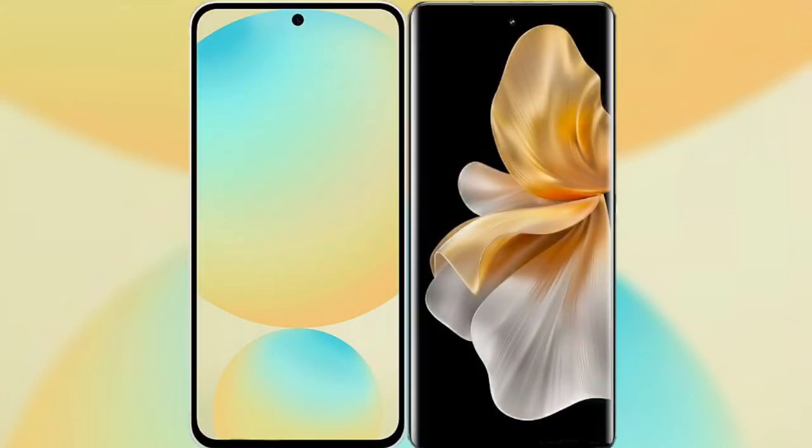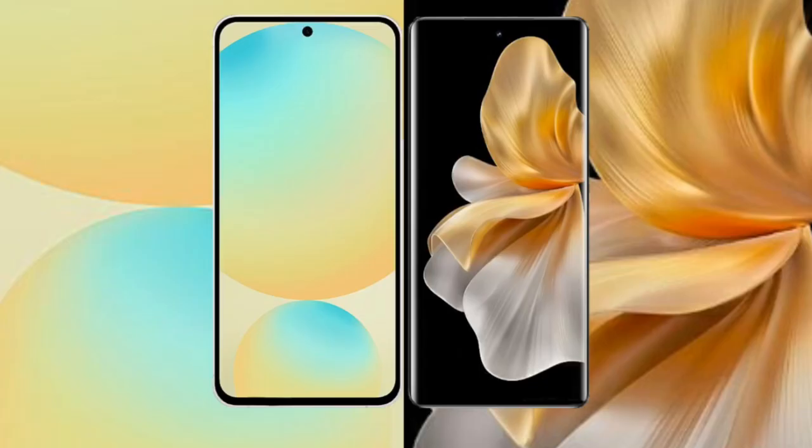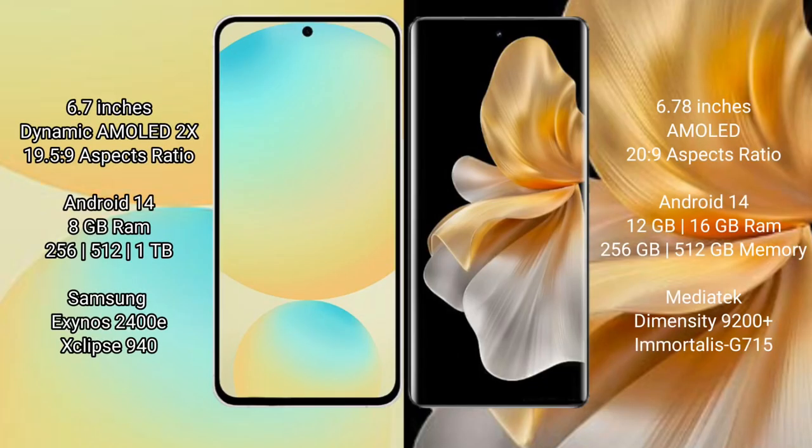I will compare the new Samsung Galaxy S24 FE with the Vivo S18 Pro. The Samsung Galaxy S24 FE features a 6.7-inch Dynamic AMOLED display, while the Vivo S18 Pro features a 6.78-inch AMOLED display.